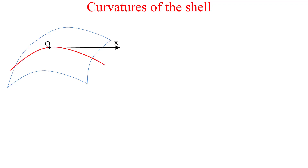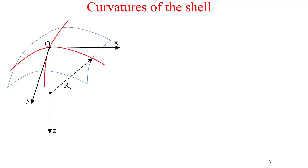Now I'll talk about the curvatures of the shell. Consider an infinitesimal portion of the shell represented by its mid surface in blue, showing the parameter curves y-constant and x-constant along with the z direction. The radius of curvature of the mid surface along the x-constant parameter curve is characterized by rx, and the radius of curvature along the y-constant parameter curve is ry.